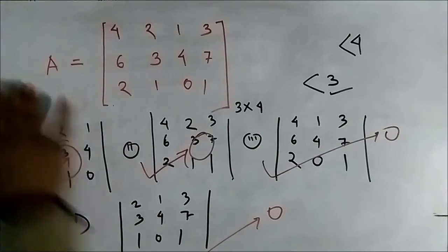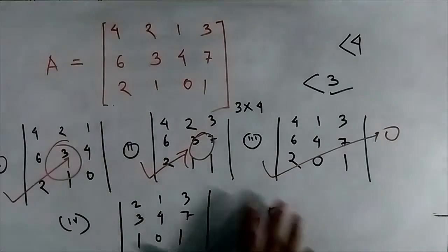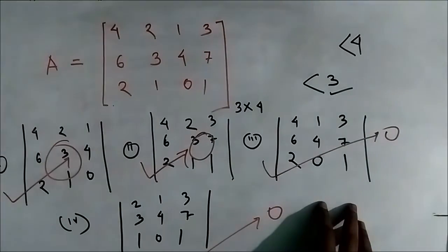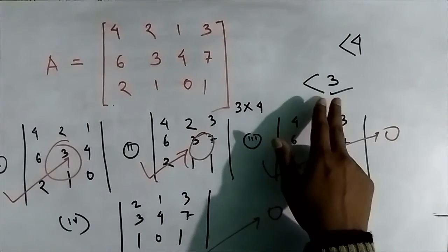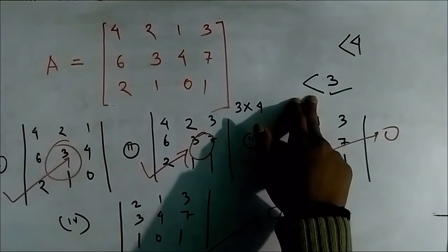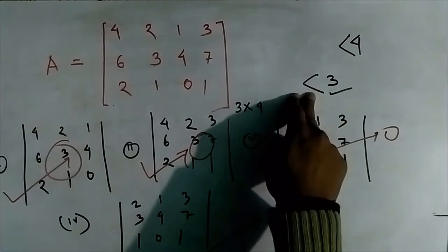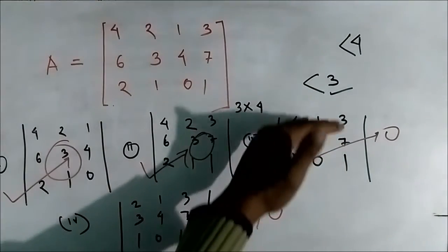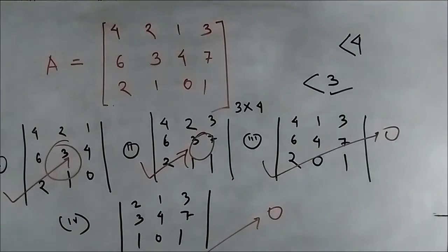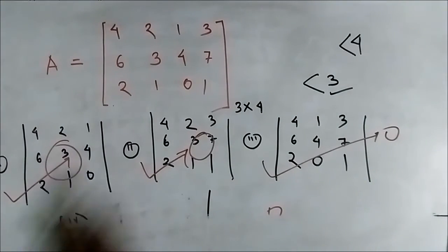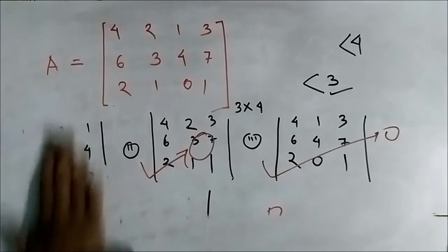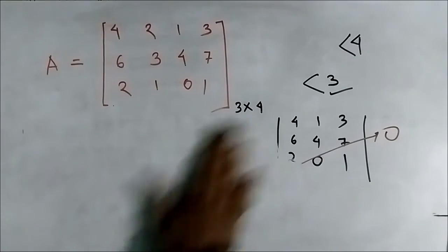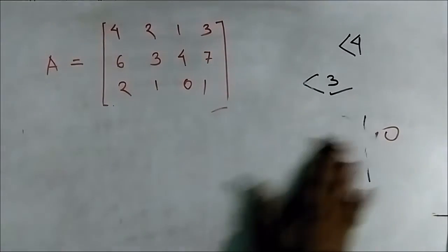Since all square submatrices of order 3 have determinant equal to 0, the rank of this matrix must be less than 3. According to the definition of rank, we can only say rank is 3 if there exists a square submatrix of order 3 whose determinant is not equal to 0. So we now check for square submatrices of order 2. If any 2×2 submatrix has determinant not equal to 0, the rank of matrix A is 2.